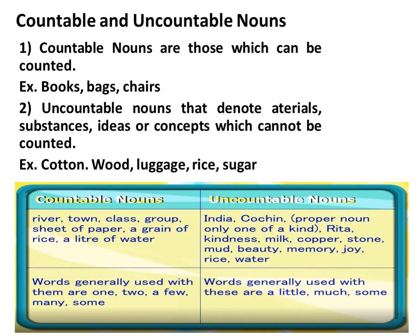Countable and uncountable nouns. Countable nouns are those which can be counted. For example: books, bags, chairs. You can count the books — how many books are there? Two books, three books. How many bags? Two bags, three bags. You can even count the chairs. Uncountable nouns denote materials, substances, ideas, or concepts which cannot be counted. For example: cotton, wood, luggage, rice, sugar — these are uncountable nouns.